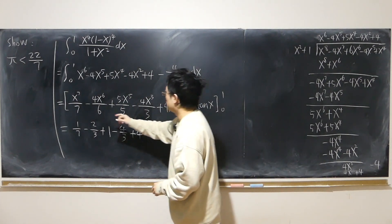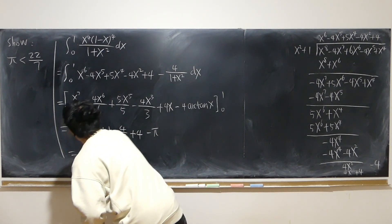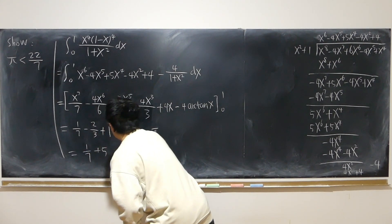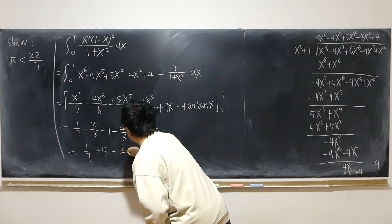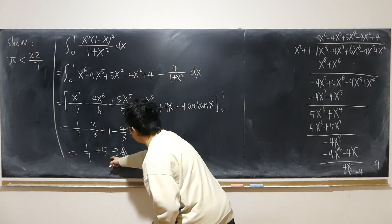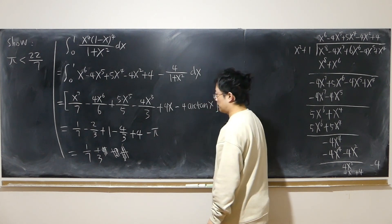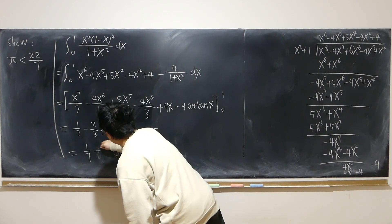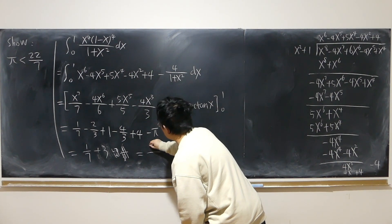Plugging in x = 0 gives all zeros. At x = 1: 1/7 minus 2/3 plus 1 minus 4/3 plus 4, minus π. Grouping the fractions: 1/7 plus (1 plus 4 plus 5 grouped), and minus 6/3 equals minus 2 plus 5 minus 2 equals plus 3. So that gives 3 times 7... sorry, 22 over 7, minus π.